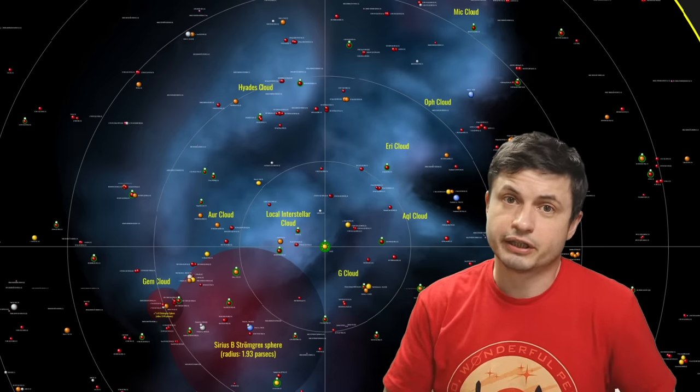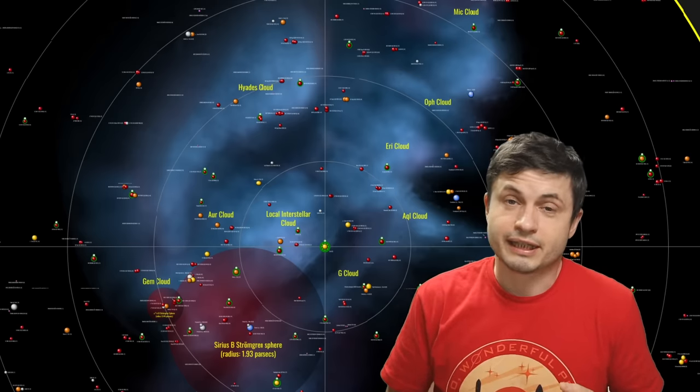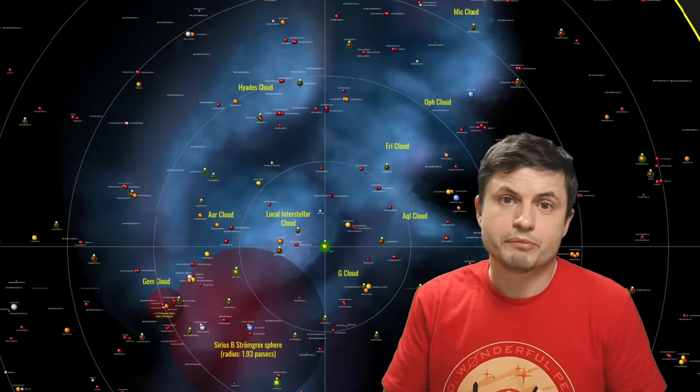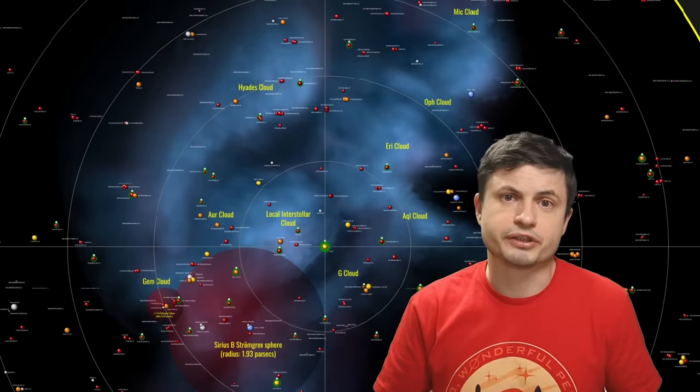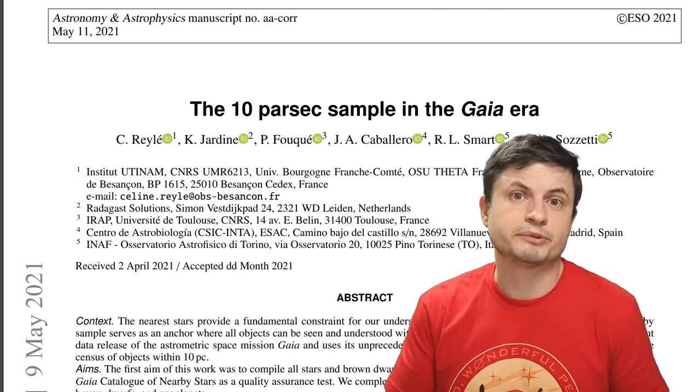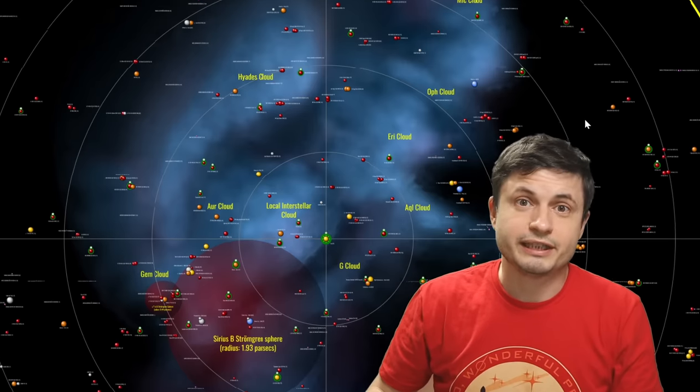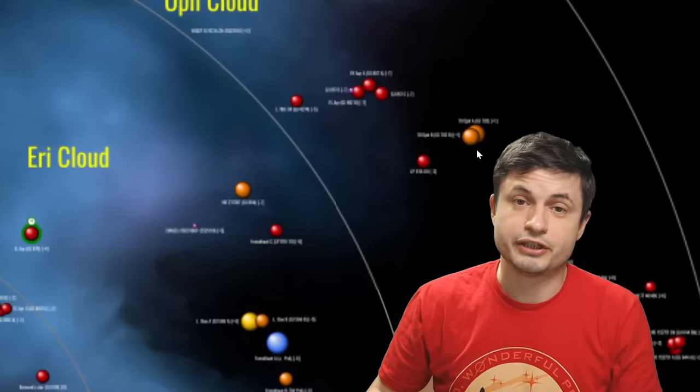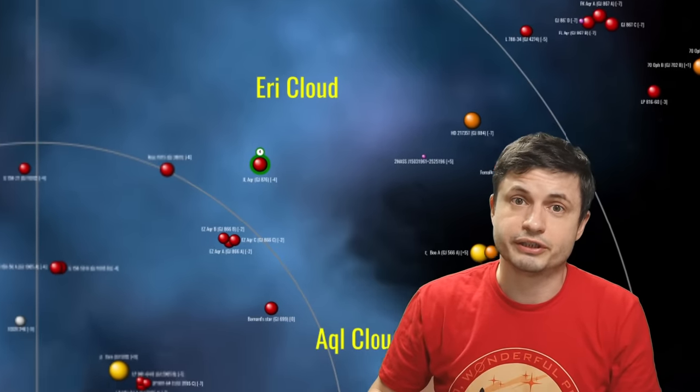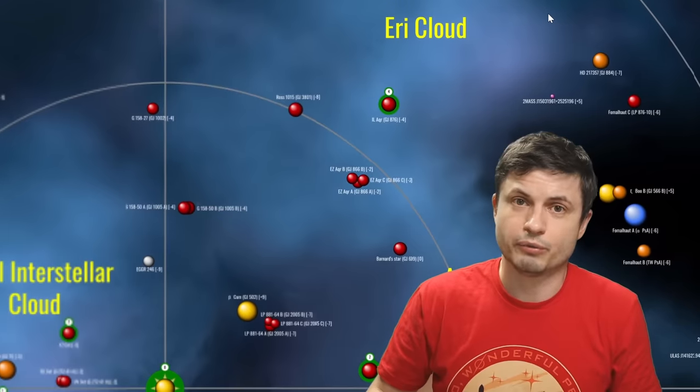It shows us pretty much every single star, every brown dwarf, all of the white dwarfs, all of the planets, and some of the other major objects with extremely accurate distances to those objects as well. This map was part of a paper recently published by European scientists. Because this map is interactive and you can zoom in and check out pretty much most of the objects near us, I figured this is one of the coolest things I've seen in quite a while.